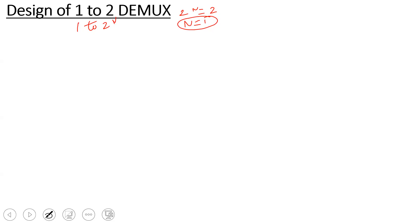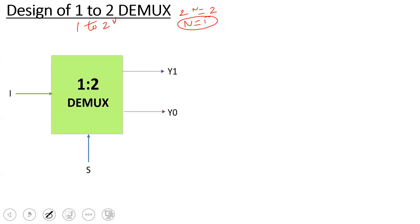So in this demo, I have one input line, one select line, and two output lines. For a 1-to-4 DEMUX, 2-to-the-power-N gives N equals 2 select lines. For a 1-to-8 DEMUX, N equals 3 select lines.